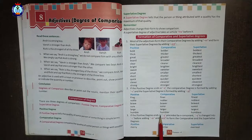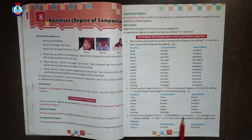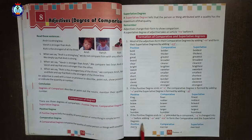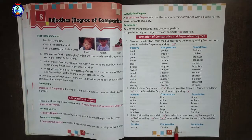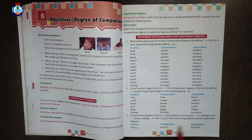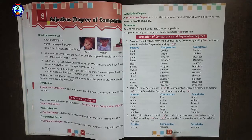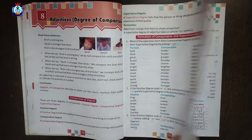If the positive degree ends in -y preceded by a consonant, the -y is changed into -i before adding -er or -est. For example: merry, merrier, merriest — the -y is replaced by -i. Heavy, heavier, heaviest.